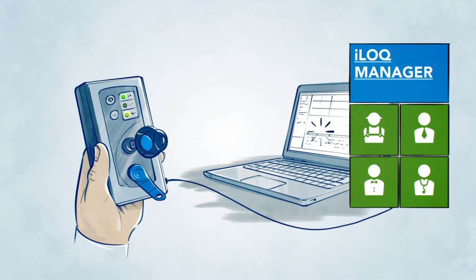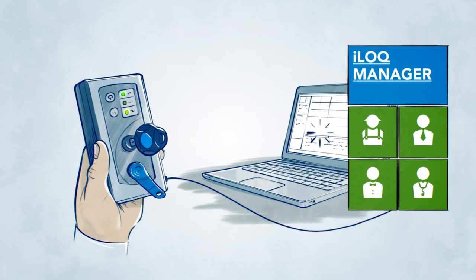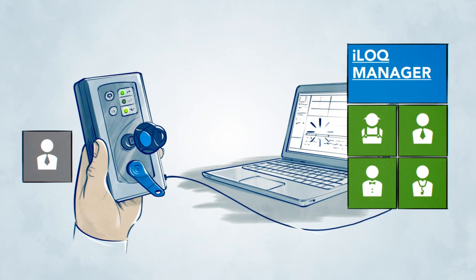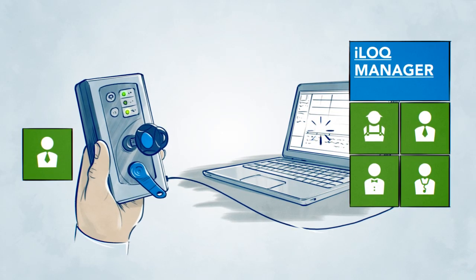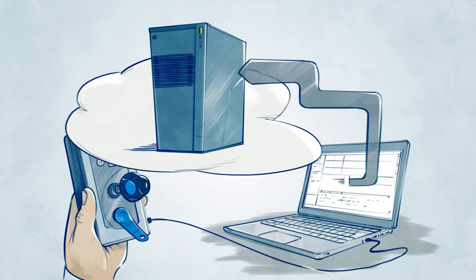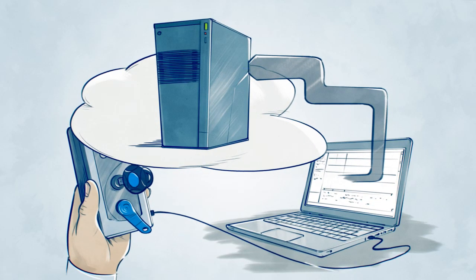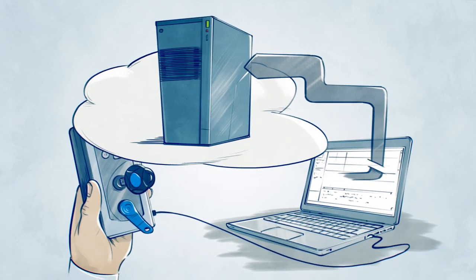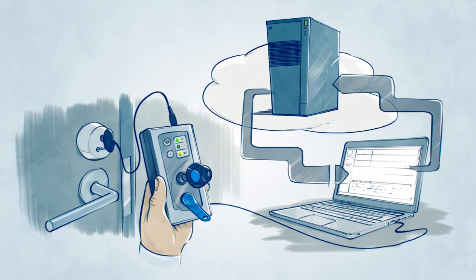The programming device connects to online access rights management software. The system contains all the up-to-date information on keys and their holders. All lock information is protected in a secure bank-level server. I-Lock is the perfect locking solution.